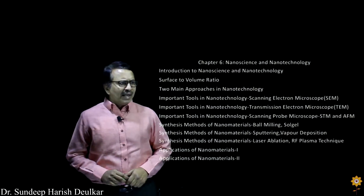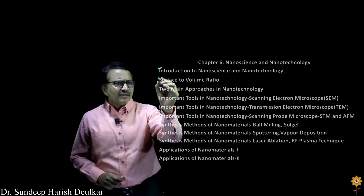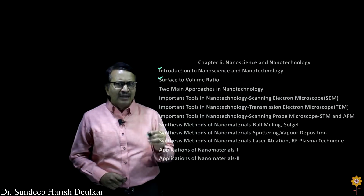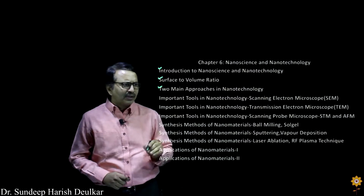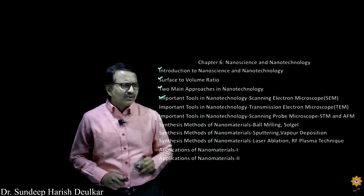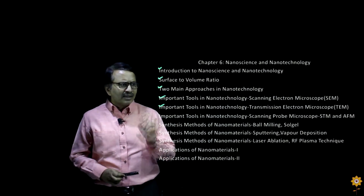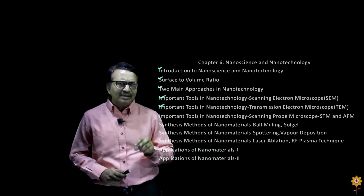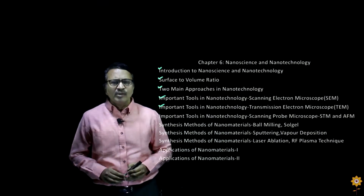Here's the list. First we had an introduction to nanoscience and nanotechnology. Next we studied the surface to volume ratio. After that we had the two main approaches in nanotechnology, that is the top-down and the bottom-up approach. This was followed by important tools used in nanoscience and nanotechnology: the scanning electron microscope, and then the transmission electron microscope, also known as TEM. Today we are going to study the scanning probe microscopes, which include the scanning tunneling microscope and the atomic force microscope.